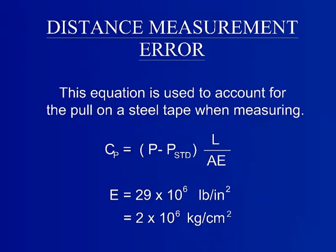Pull correction is needed when the tape is pulled with a tension greater than the tension at which it was calibrated. The equation used to calculate this is: the pull correction equals the difference between the tension at which it was pulled for measurement and the tension at which it was calibrated multiplied by the total length measured, then divided by the cross sectional area and the modulus of elasticity.